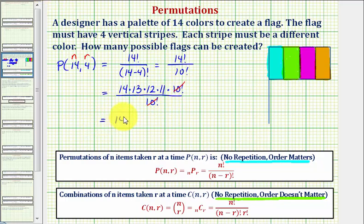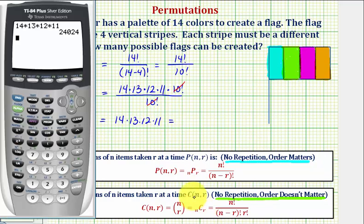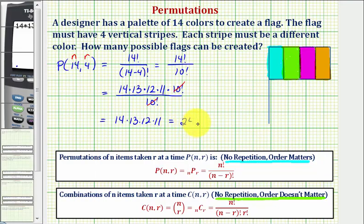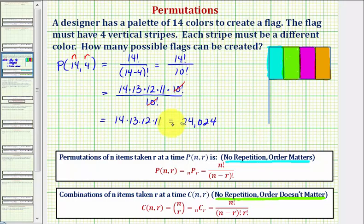So we're left with 14 times 13 times 12 times 11, which is equal to 24,024. So there are 24,024 possible flags.